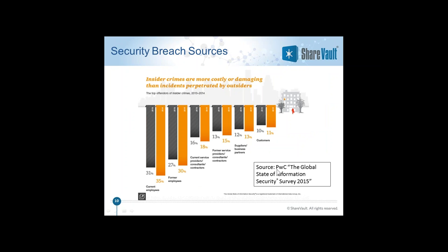Here's another PricewaterhouseCoopers survey from 2015 showing the sources of breaches inside organizations. It can happen from customers — if you send a price quote to a customer and they take it to a competitor. It can happen through suppliers and business partners, vendors, and manufacturers. Intellectual property sharing with any party is a concern. It can also be consultants or employees. Lots of organizations have had disgruntled employees — they are always a vulnerability.